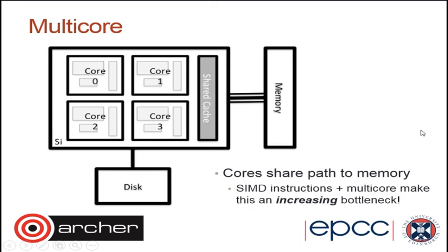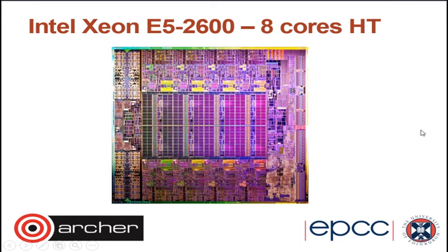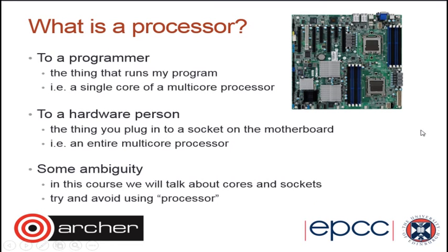One issue this brings up, especially in teaching, is what do you call things now? We used to have processors — each node had one processor, or maybe two or four. Now we have the idea of processors, and inside each processor there are cores, and each core can run a program. Maybe we shouldn't talk about processors anymore — we should talk about cores and sockets. In Archer, each node has two processors and each processor has 12 cores inside it. But from a programming perspective you can think of each core as a processor, because it's a standalone thing that lets you run a piece of code on it.